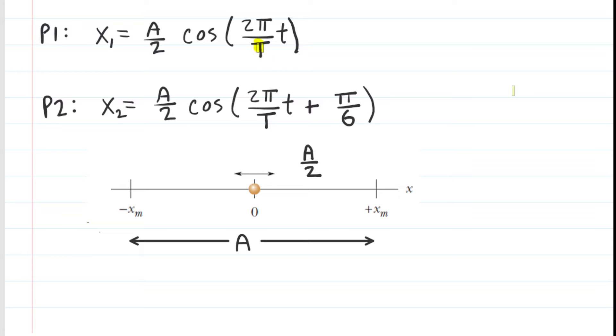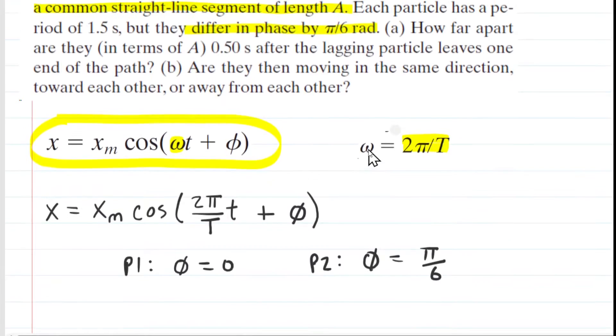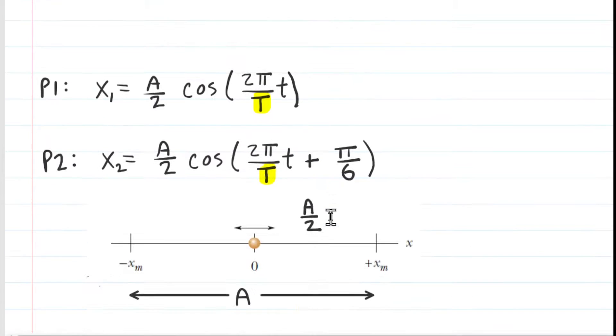We can next go back and understand capital T. Capital T is the period of motion for each particle. It's basically how long it takes the particle to complete one cycle of its motion. This question noted that each particle has a period of 1.5 seconds. So for each particle, we can say capital T is equal to 1.5 seconds. So we'll make that substitution.